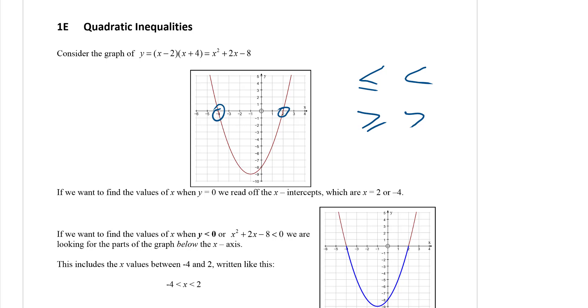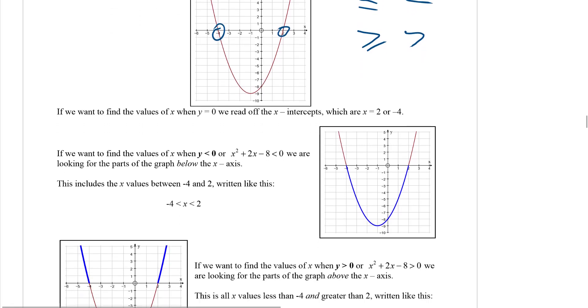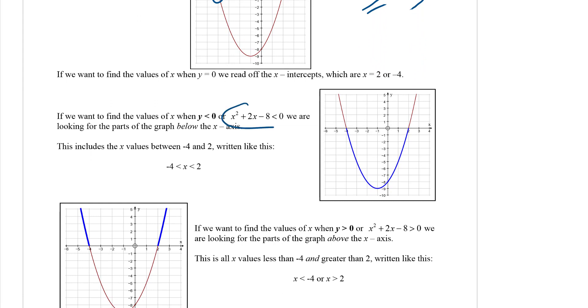But what if we want to solve this question here, which is when is this thing less than 0? So what are the values of x such that x squared plus 2x minus 8 is less than 0? Looking at the graph, we can see that's in this blue section here. All of these values here mean x values where this thing is less than 0. So it's really where the y value is less than 0.